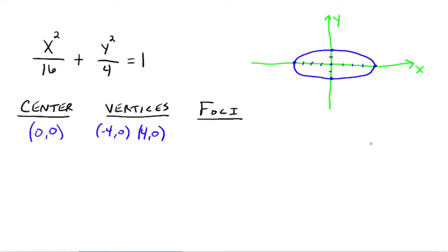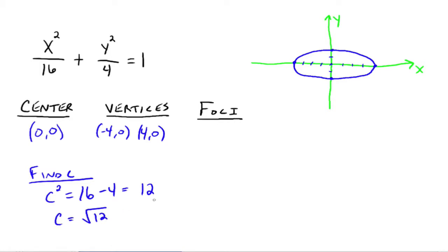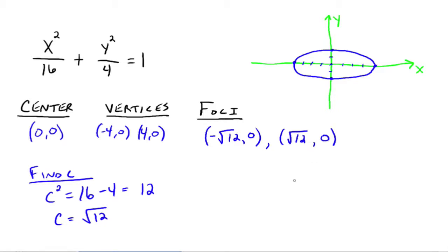Now we want to figure out what the foci are. To find the foci, we need to find C. C squared is equal to the bigger number minus the smaller number: 16 minus 4, so C squared equals 12, which means C equals the square root of 12. The foci are on the major axis, so we add and subtract to the X part of the center. That gives us negative square root of 12, 0 and square root of 12, 0.